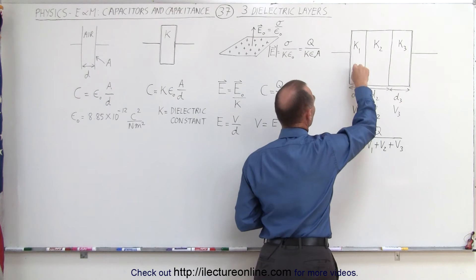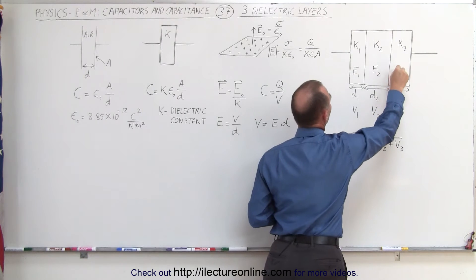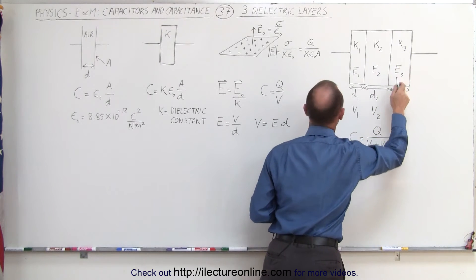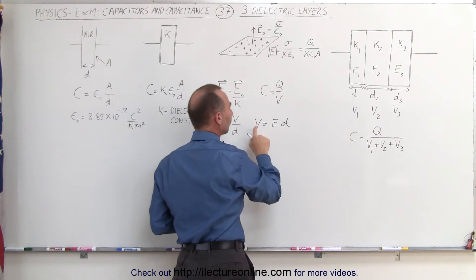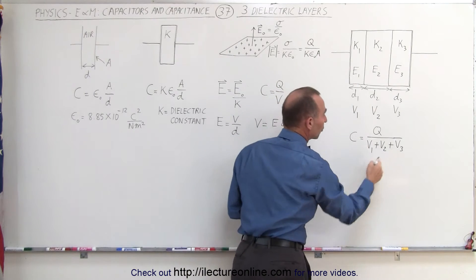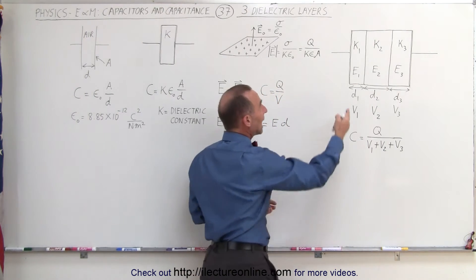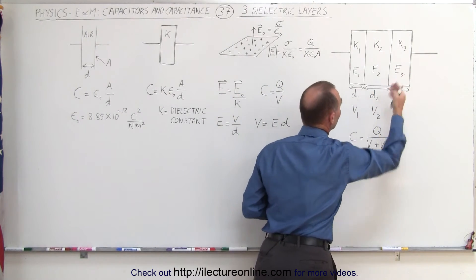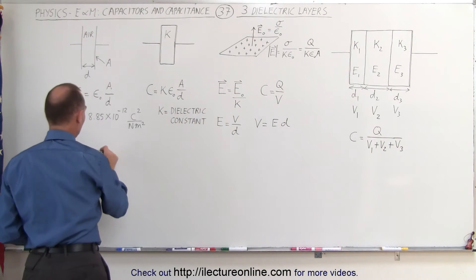So we'll have electric field strength in layer number one, electric field strength in layer number two, and electric field strength in layer number three. And from that we can find voltage one, voltage two, and voltage three, because ultimately we need to add the voltages across each of the three layers. We can do that as follows.